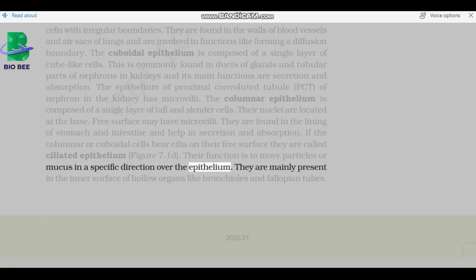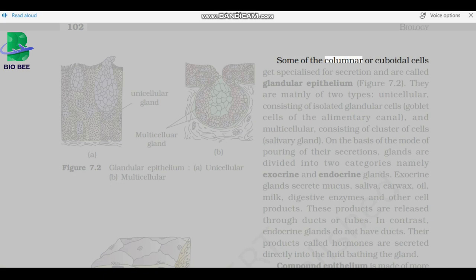They are mainly present in the inner surface of hollow organs like bronchioles and fallopian tubes. Some of the columnar or cuboidal cells get specialized for secretion and are called glandular epithelium. They are mainly of two types: unicellular, consisting of isolated glandular cells, goblet cells of the alimentary canal, and multicellular, consisting of cluster of cells, salivary gland. On the basis of the mode of pouring of their secretions, glands are divided into two categories, namely exocrine and endocrine glands.